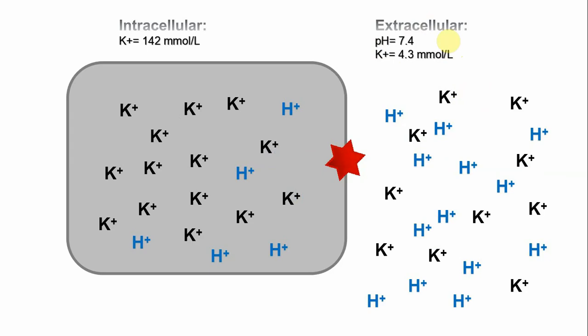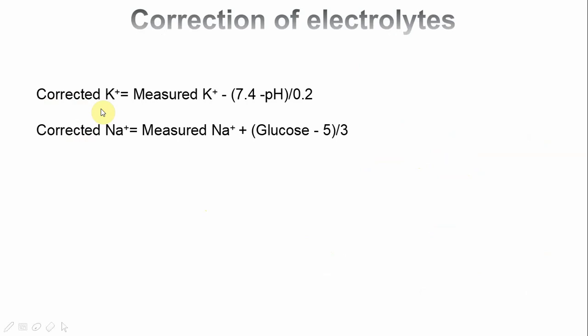When treatment is completed and pH reaches 7.4, the corrected (predicted) potassium can be calculated: corrected potassium = measured potassium − [(7.4 − measured pH) ÷ 0.2]. In our patient, that is 7.3 − [(7.4 − 6.8) ÷ 0.2] = 7.3 − 3 = 4.3 mmol/L — the expected potassium once pH is normalized. Monitoring this is essential to anticipate dangerous hypokalemia as treatment proceeds.